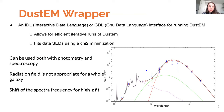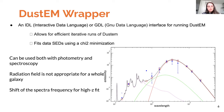The wrapper can be used both with photometry and spectroscopy. However, do take this with a grain of salt because the radiation field we assume is not appropriate for a whole galaxy. One thing we had to change in the code was to shift the spectra to the correct frequency to fit the emissivity of the dust, because these galaxies are at high redshift.